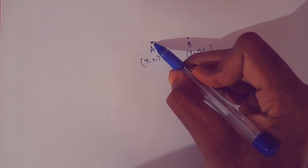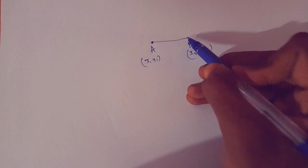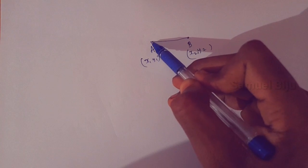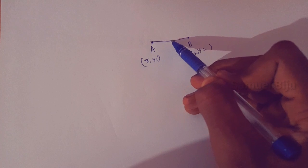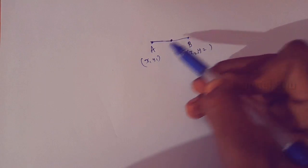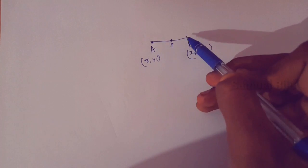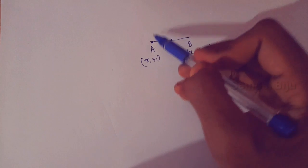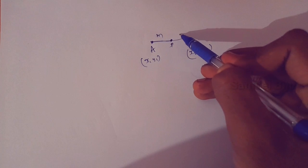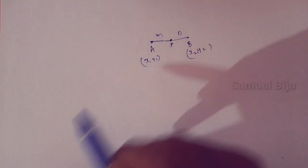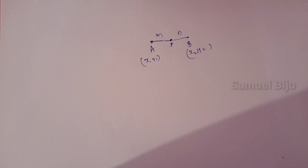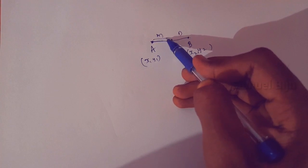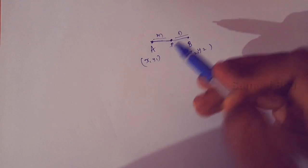We discussed the distance formula in the previous video. If there is a point in the internal, it is split and divided. If there is m ratio n, then m is the distance on one side and n is the distance on the other side.